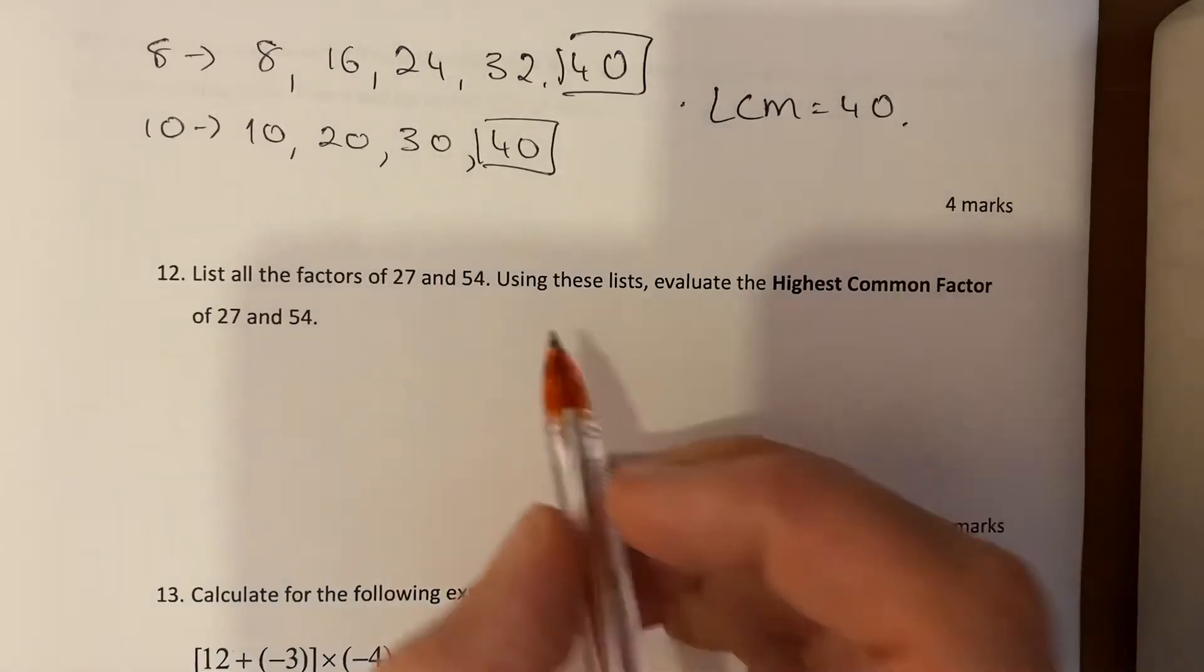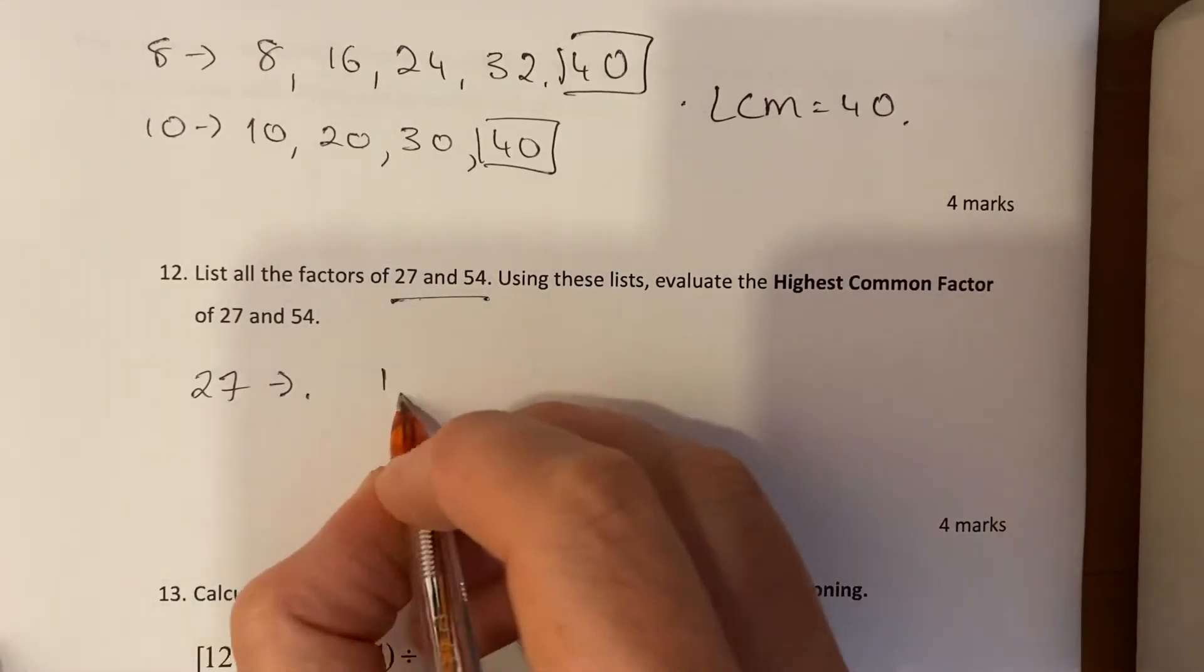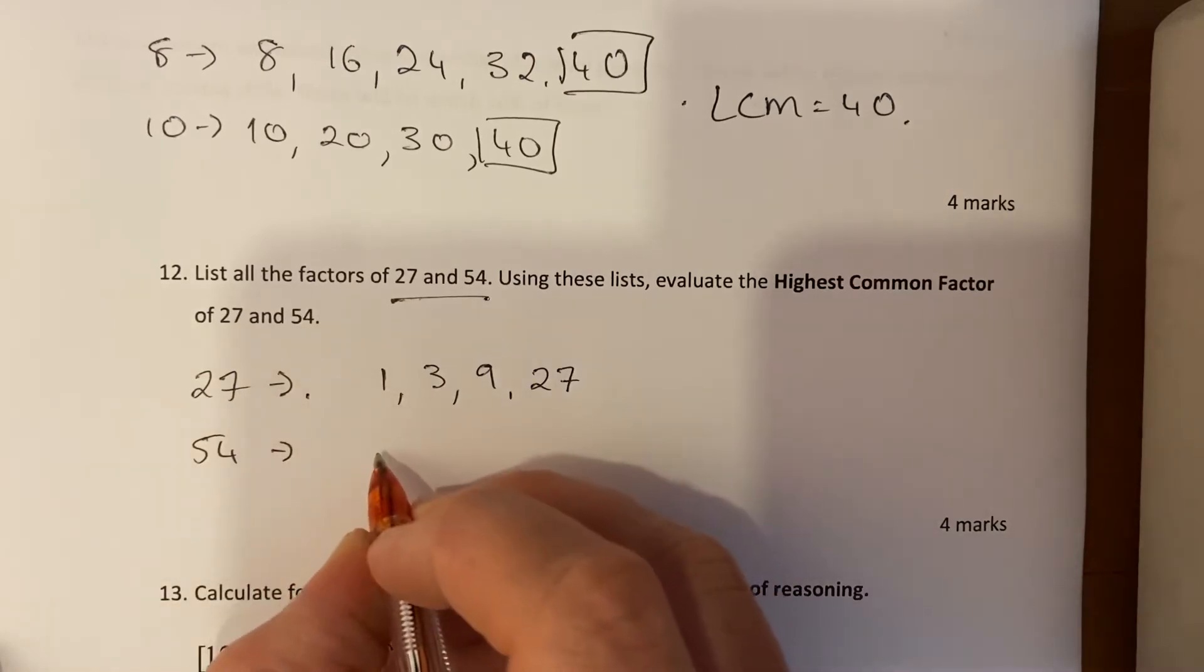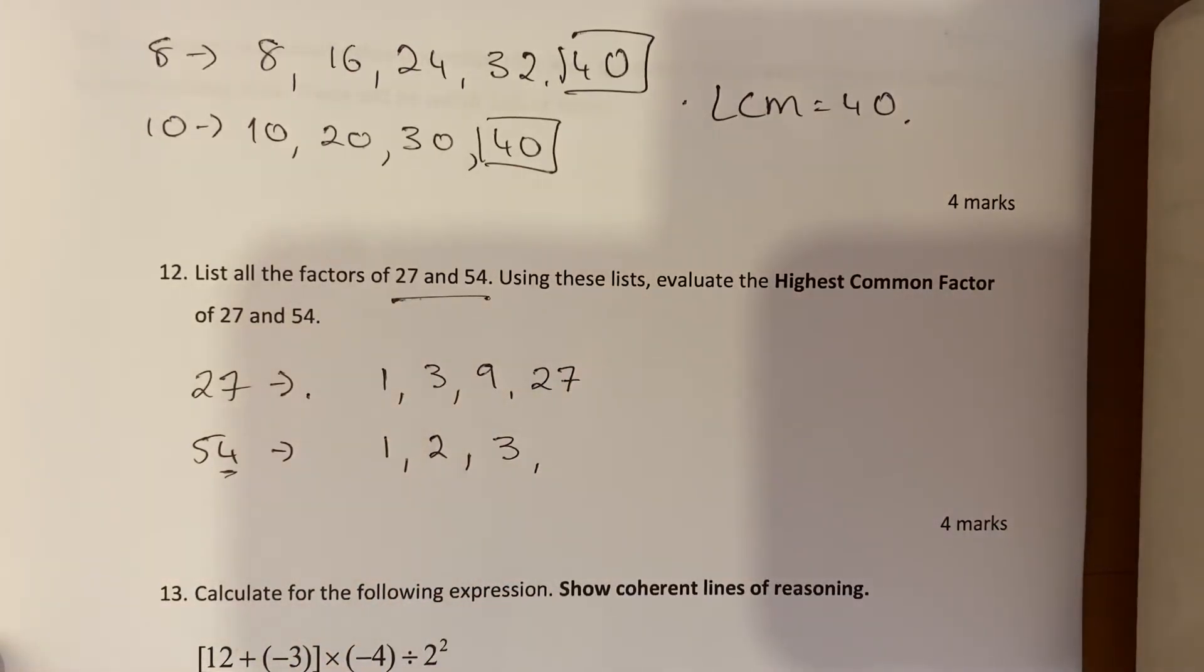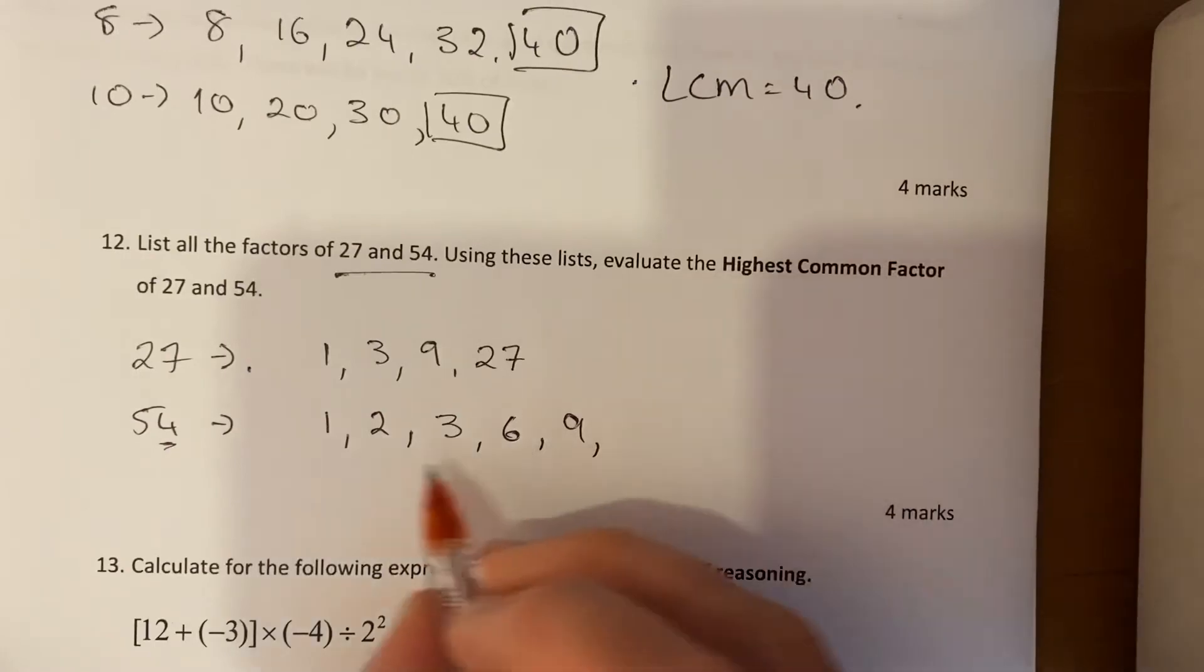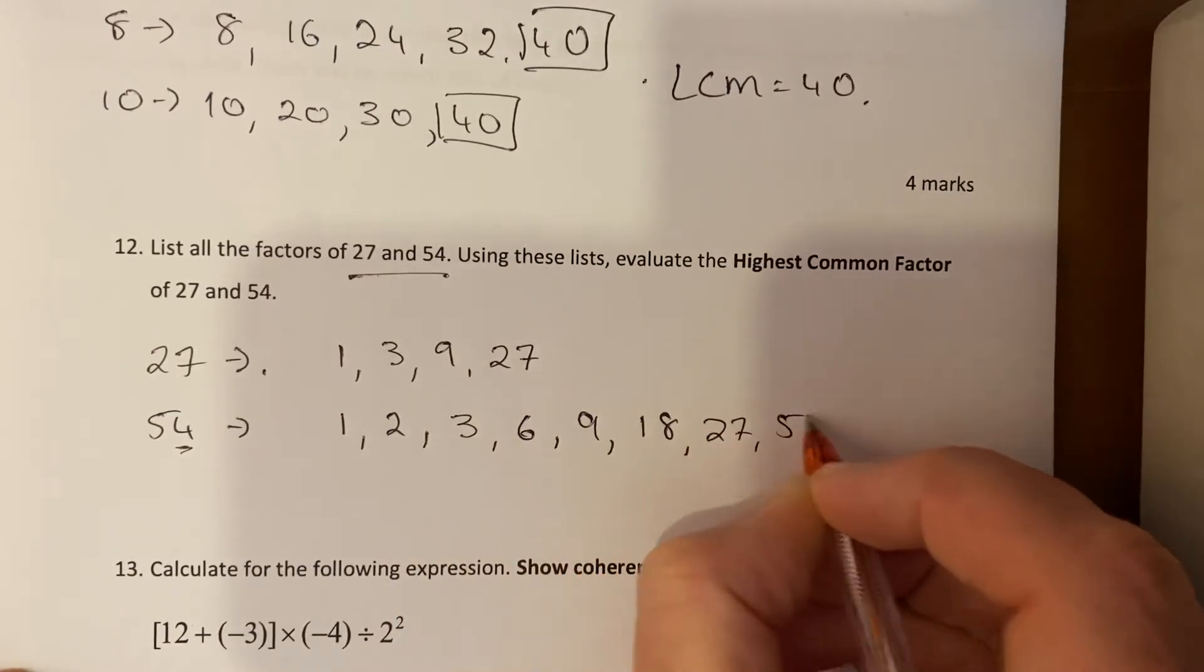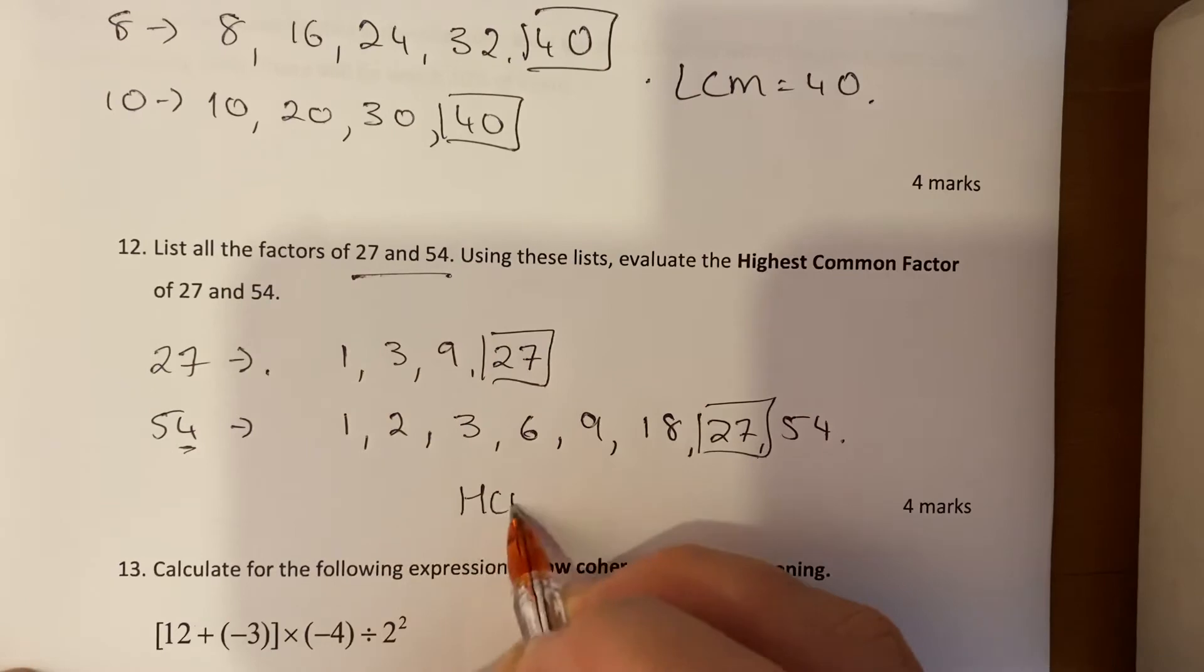List all the factors of 27 and 54 using these lists. So it's another factor-based question. 27: you can use the method we had on the other page - 1, 3, 9, 27, only four I think. 54 then: 1, 2 because it's an even number, 3 also goes in I think, 6 goes into this one as well. 4 doesn't and 5 doesn't and 6 does. 9 does - 2 must have its buddy, 3 must have its buddy. So how many times does 3 go in? 18 I think. 2 must have its buddy so 27, and 54. Tricky one now - the highest common factor. Well I can see 27 is in both lists, so the HCF is 27.